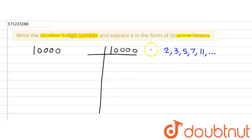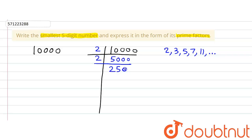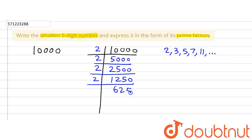First of all, we will check whether 10000 is divisible by 2. Yes, it is. So 10000 ÷ 2 = 5000; 5000 ÷ 2 = 2500; 2500 ÷ 2 = 1250; 1250 ÷ 2 = 625. Now 625 is not divisible by 2.